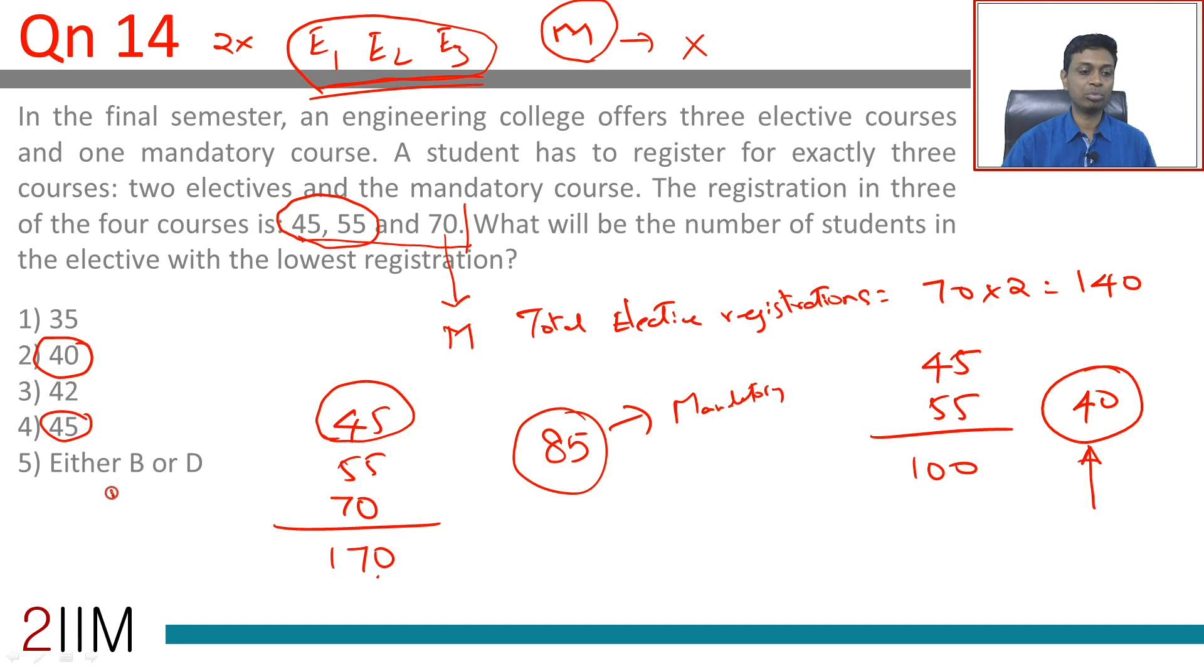So either B or D, that works best. Wonderful question because the three numbers we have given could be two electives and a mandatory, or all three electives. We have to be switched on about these three being both possibilities.